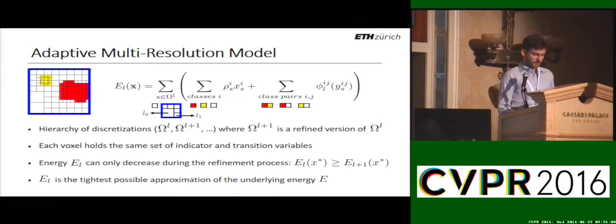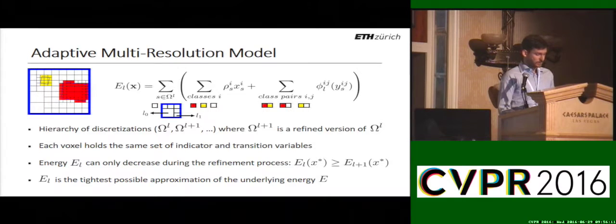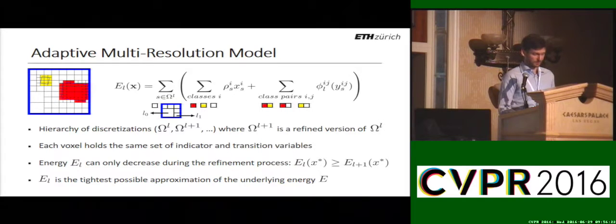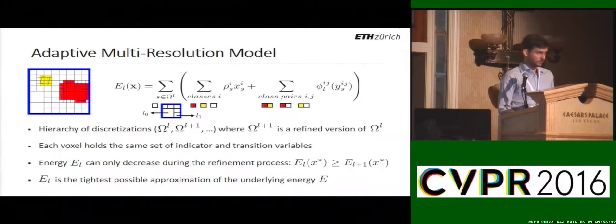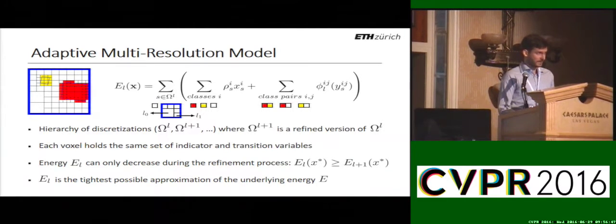The main difference in the multi-resolution model is the superscript L for omega and phi. For omega, we now have a hierarchy of discretizations with voxels at different resolutions. The phi-L indicates a resolution-dependent regularizer. In this adaptive formulation, we seek to fulfill a few requirements. First, each voxel must hold the same set of variables independent of its resolution, allowing us to reduce the number of unknowns by storing voxels at adaptive resolution. Information also spreads more quickly over the whole volume via bigger voxels. Furthermore, the energy can only decrease during the refinement process, and the adaptive energy corresponds to the tightest possible approximation of the underlying energy where all voxels are at the highest resolution.